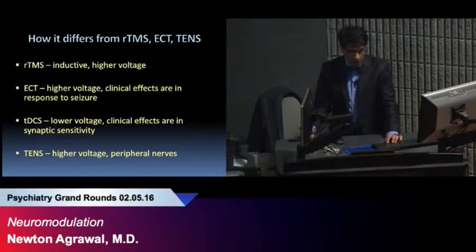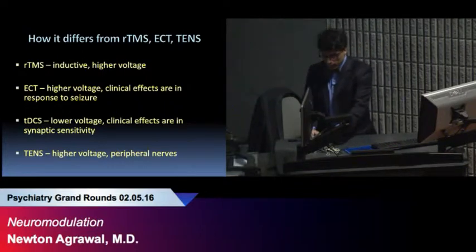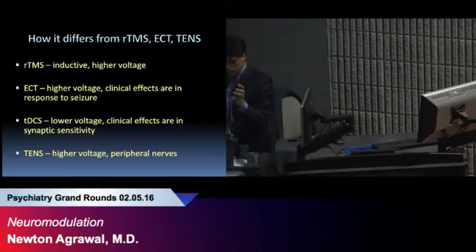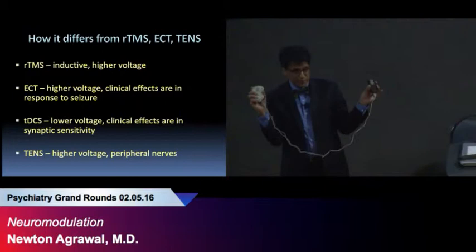Basically, RTMS involves higher voltages, and TDCS also is similar, but it doesn't require as much voltage as ECT, and its efficacy is related to synaptic sensitivity. There's another treatment that's been widely used, and it involves using a TENS unit, and here's an example of a TENS unit. This is basically a TDCS device.